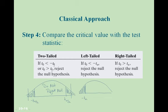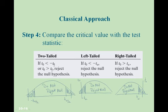In the left-tailed test, we do not reject the null in the right region. If the test value falls below the critical value, we reject the null hypothesis. The opposite is true for the right-tailed test: we have a positive T sub alpha, and we do not reject the null on the left side. If our test statistic is greater than our positive critical value, we reject the null hypothesis.